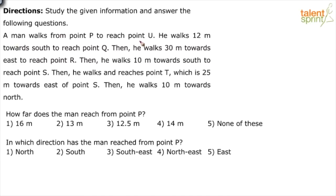A man walks from point P to reach point U. What happens between point P and point U is what is given here. He walks 12 meters towards south to reach point U. Remember, this is the start of a journey.